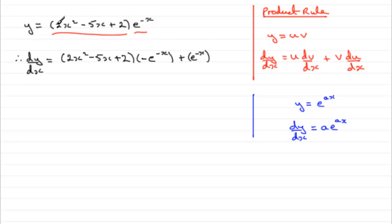So differential of 2x squared is going to be 4x, and differential of minus 5x is just going to be minus 5. And that's essentially it, that's what dy dx equals.